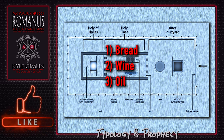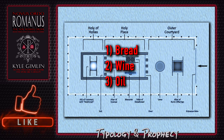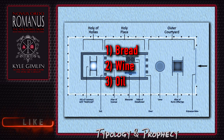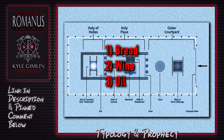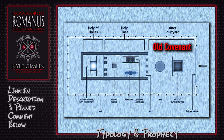The significance of these three — bread, wine, and oil — is that they are the three typological symbols of the new covenant. Therefore, I would argue that just as the outer courtyard is connected to the old covenant, the holy place of the tabernacle is connected typologically to the new covenant.